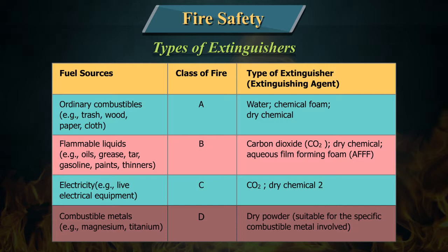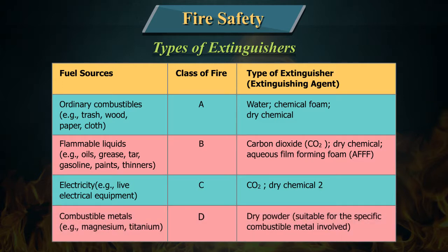Its class of fire is C. Types of extinguishers for Class C: CO2, dry chemical. Fuel source — combustible metals, example: magnesium and titanium. The class of fire is D. Type of extinguisher: dry powder suitable for the specific combustible metal involved.